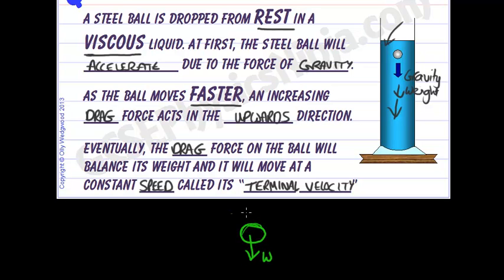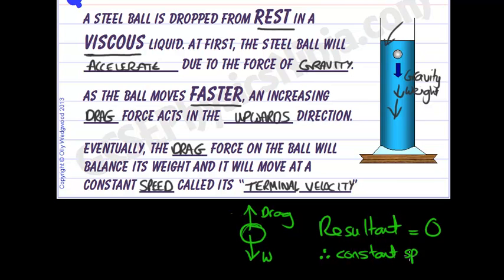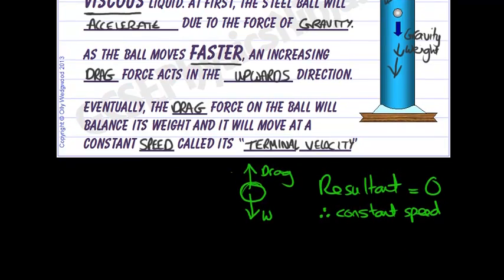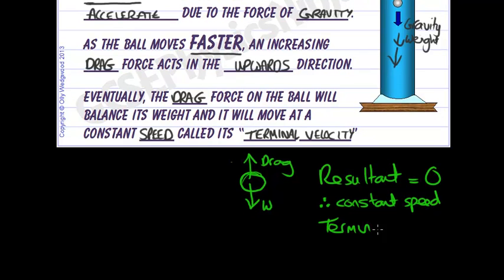As it gets faster, the upwards drag force will increase until it is the same size as the weight. When this happens, there is no winning force - they are balanced forces and the resultant force is zero. Therefore, there can be no acceleration. It must be moving at a constant speed, which we call the terminal velocity.